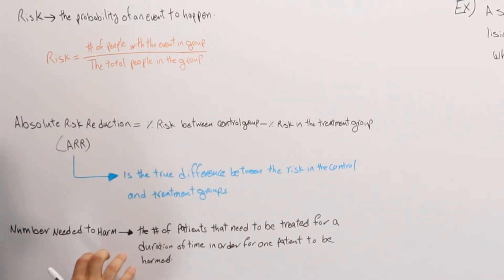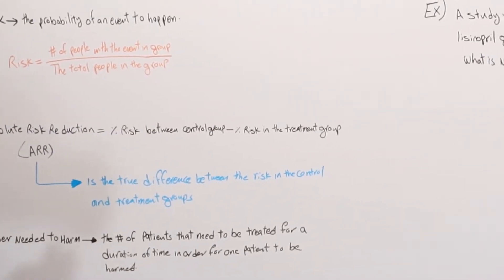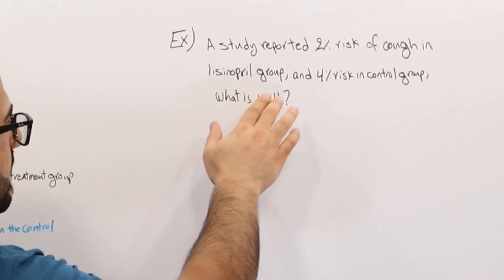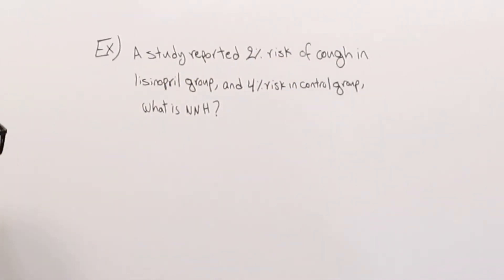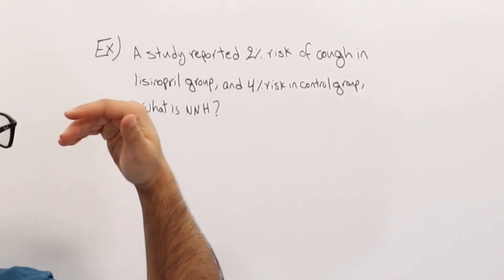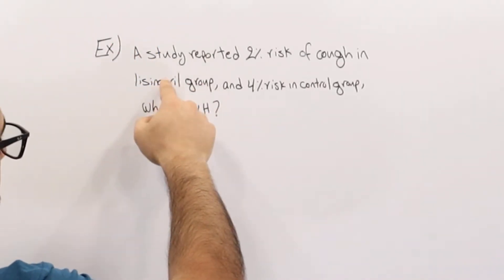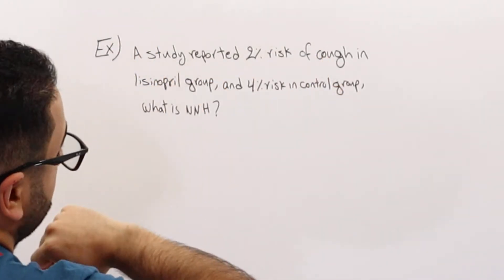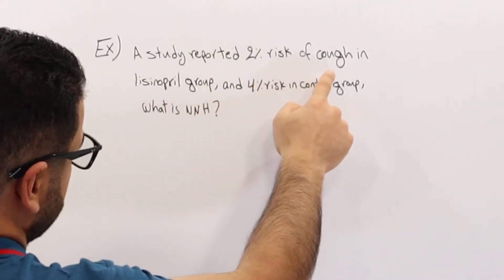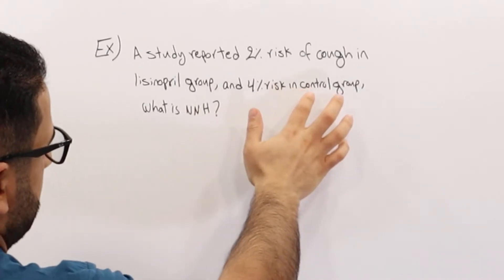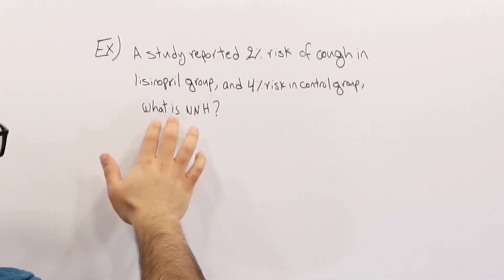To better understand what number needed to harm is, let's take this example. A study reported 2% risk of cough in lisinopril group. Lisinopril is an existing medication, but just for the sake of understanding the concept, I picked lisinopril because ACE inhibitors are known to cause cough. There's 2% risk of cough in lisinopril group and 4% risk in control group. What is number needed to harm?